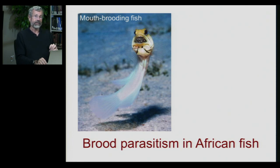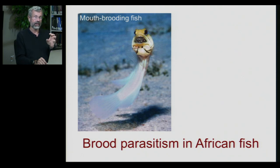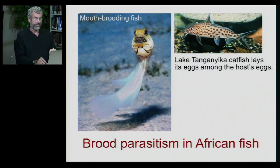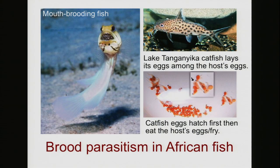Fish show similar brood parasitism. In African lakes, mouth-brooding fish pair up; the female lays eggs in the male's nest and he keeps the fertilized eggs in his mouth. But a parasitic catfish manages to lay its eggs among the host's eggs. The catfish eggs hatch first inside the father's mouth and proceed to eat his babies. So this good father ends up brooding a parasite.